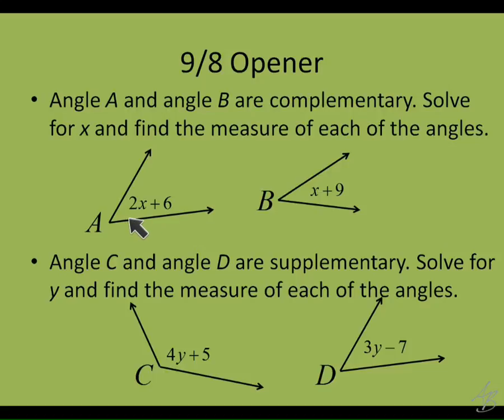So how do I portray that using an equation? Put 2x plus 6 plus x plus 9 equals 90. So 2x plus 6 — that's the first one — plus x plus 9 equals 90. We know that if we add those two together, we're going to get 90.